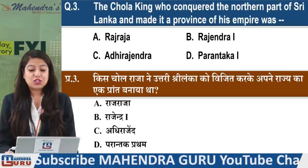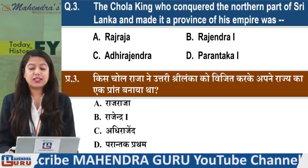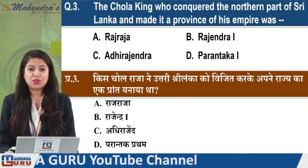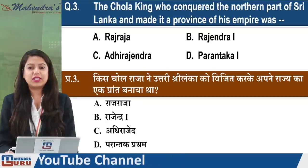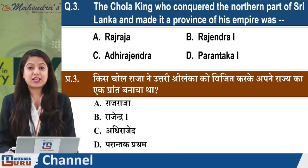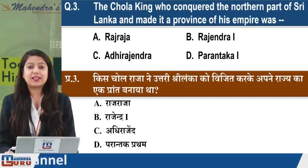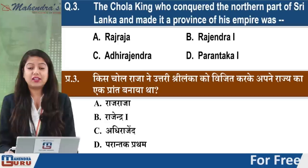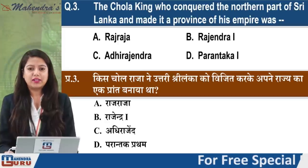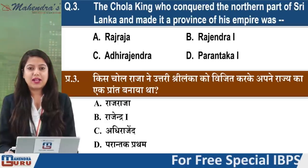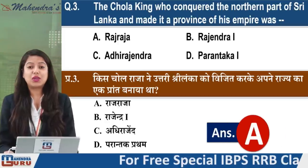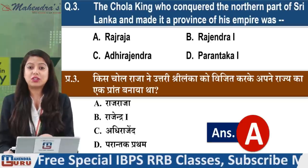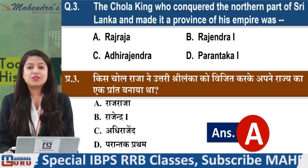Next question: The Chola king who conquered the northern part of Sri Lanka and made it a province of his empire was? Options: Raj Raja, Rajendra I, Abhidhirajendra, or Pratanka I. The answer is Raj Raja - he conquered not all of Sri Lanka but specifically the northern part.